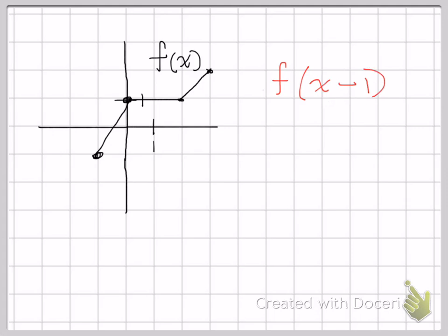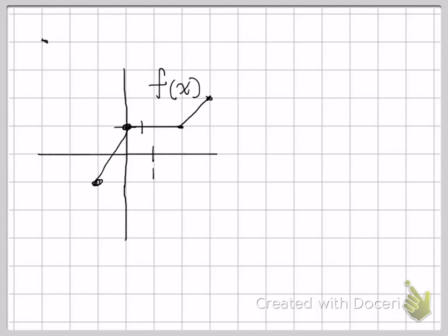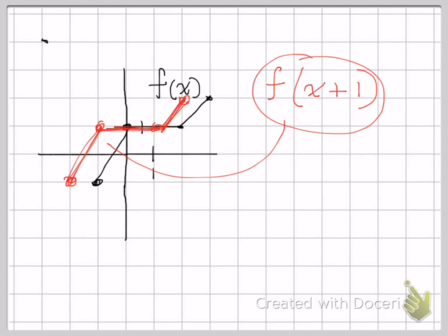The one thing to note: this minus one — you might think that's going to shift to the left because it's minus, but it's actually to the right. So I'm going to take each of the points and shift them one unit to the right, and that red graph is my resulting horizontal shift one unit to the right. For a shift to the left, it's the opposite of what you'd think — a plus one will shift it to the left, giving us f of x plus one.